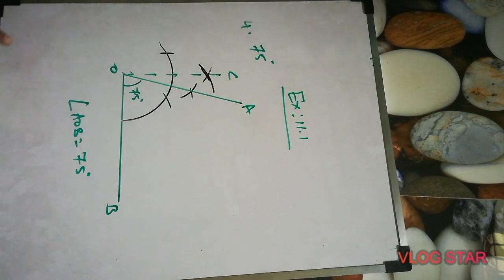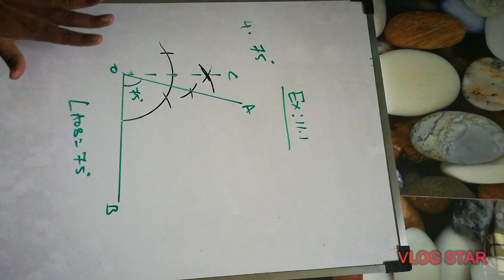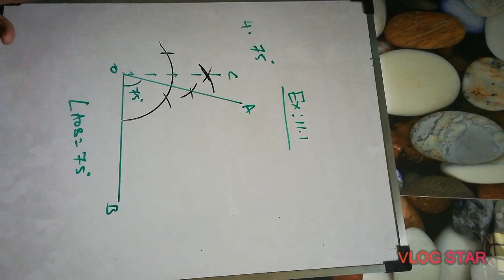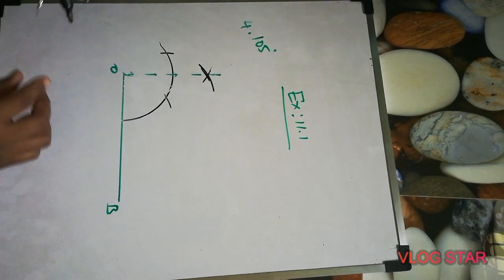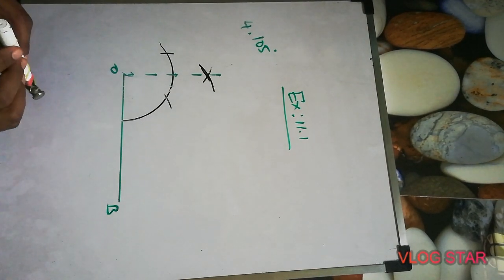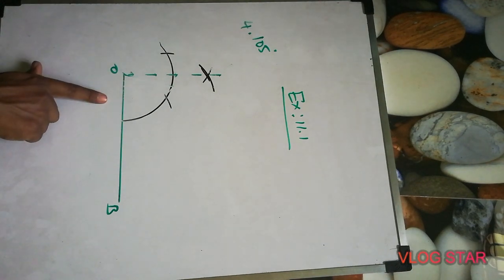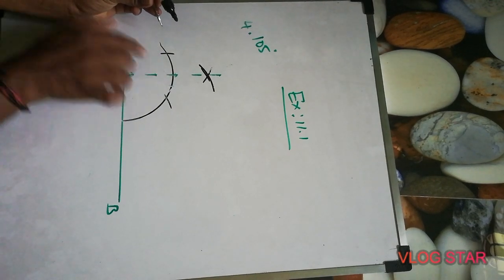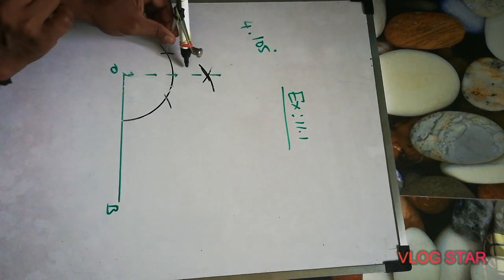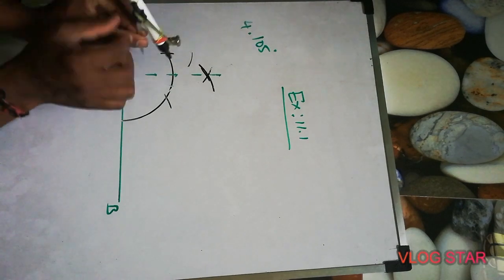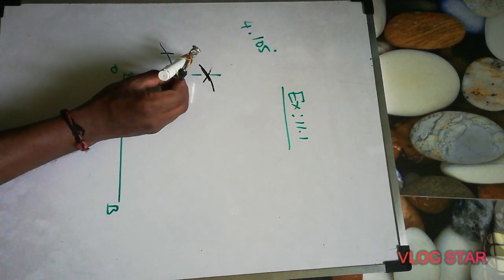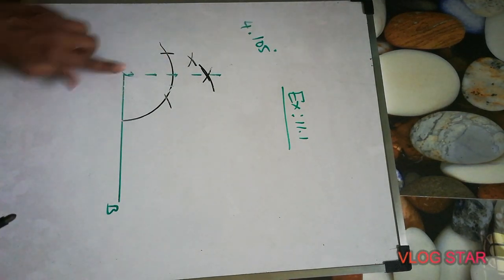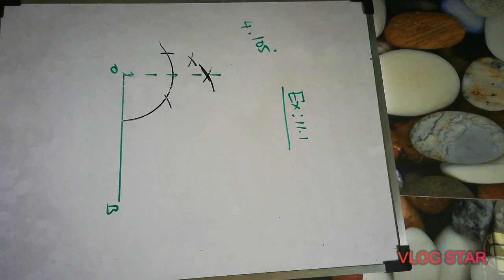Next, 105 degrees. The same thing — first draw 90 degrees. After that, take the arc between the second point and the 90 degree line, take more than half, cut it here, and from the 90 degree line cut it again. Here and here, if we cut more than half and join up and down, that is 105 degrees.